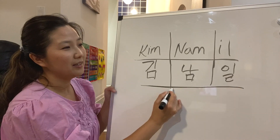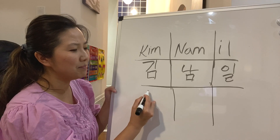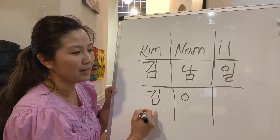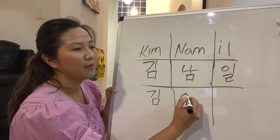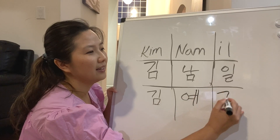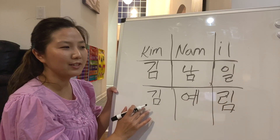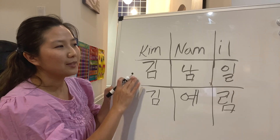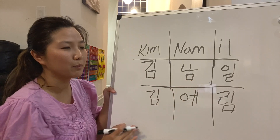Same thing with us — my name is Kim, that's my last name. In Korean, your last name always goes first. My first name is Ye-rim. So as you can see, we all have three syllables. Now this is the birth name that his birth mom gave him — Kim Nam-il — when he was born.